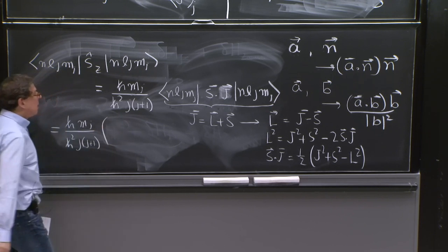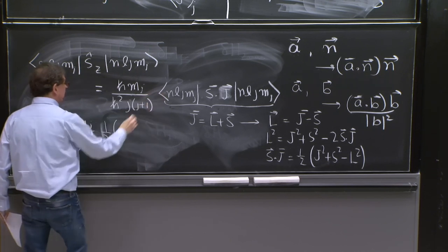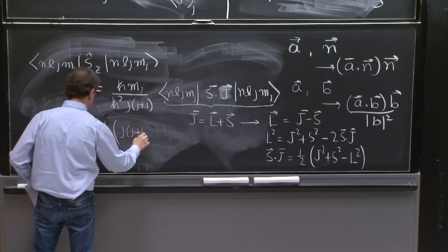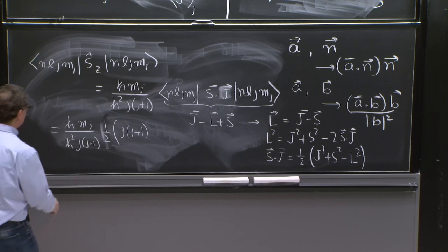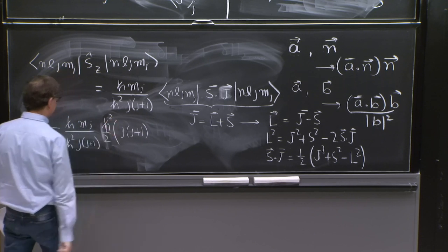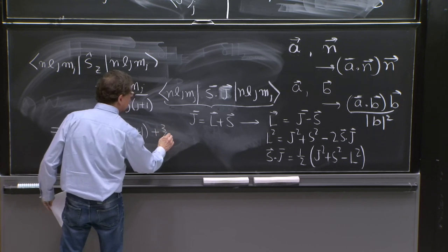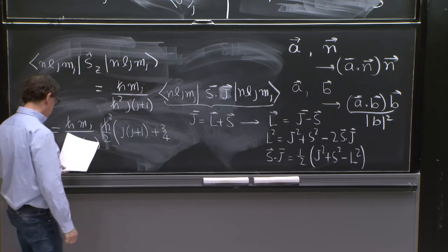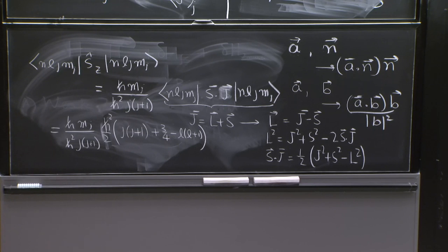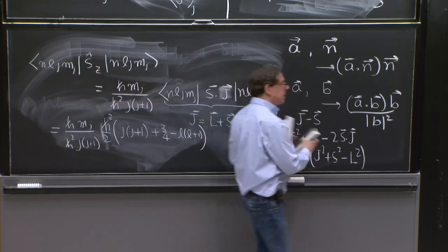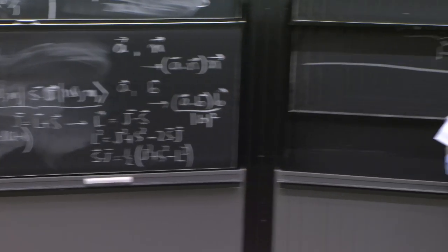So with s dot j being this, you see immediately what is this number. This is h bar mj h squared j times j plus 1. And now, 1 half. So I have a 1 half here. I'll put it in front. j squared. So this is j times j plus 1. There's an h squared in addition. h squared here. j times j plus 1. s squared, which is 3 quarters for it's been 1 half, minus l squared, which is minus l times l plus 1. Almost there. Wow, this takes time. But we have a result.